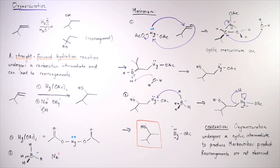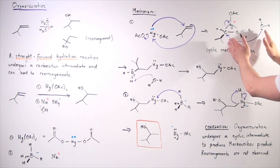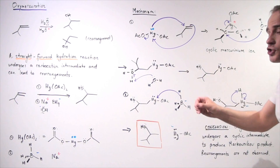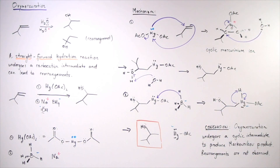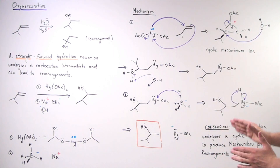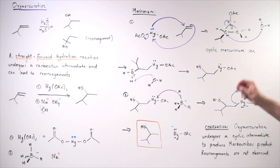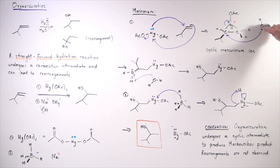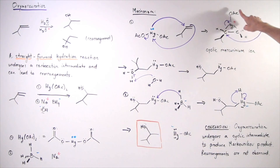One last point: why does water attack the more substituted carbon rather than the less substituted one? If we examine the transition state of this cyclic intermediate, we see that a partial positive charge forms on the more substituted, more stable carbon. Therefore, the transition state is more stable when the lone pair of electrons attacks the more substituted carbon, giving that pathway a higher reaction rate compared to attack at the less substituted carbon.